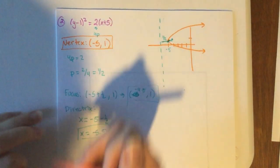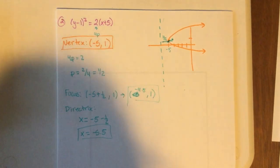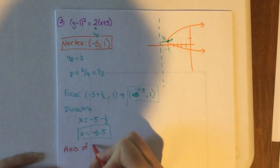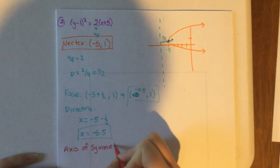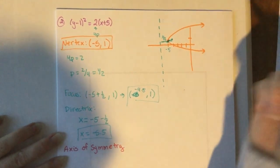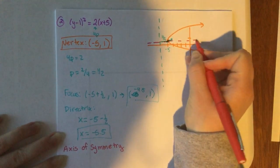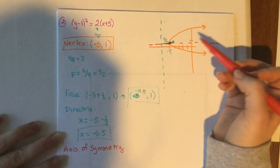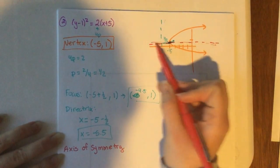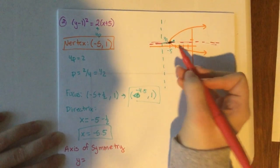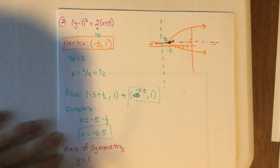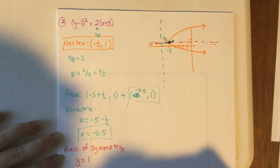The last thing is the axis of symmetry. This time the parabola opens left-right, so the axis of symmetry is a horizontal line running through the vertex. Since it's horizontal, it's y equals something. The y value of the vertex is 1, so the axis of symmetry is y equals 1.